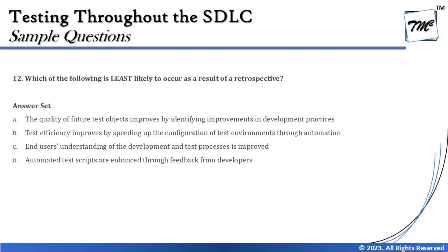Option C says end users' understanding of the development and test process is improved. End users' understanding of the development and test process — who are we to teach them what our development and test process is? If we talk about understanding the needs of the user, that's done through user stories or acceptance criteria. But helping end users understand our development and testing process is not something we do at any point during the entire project life cycle. Retrospective is not meant for that.